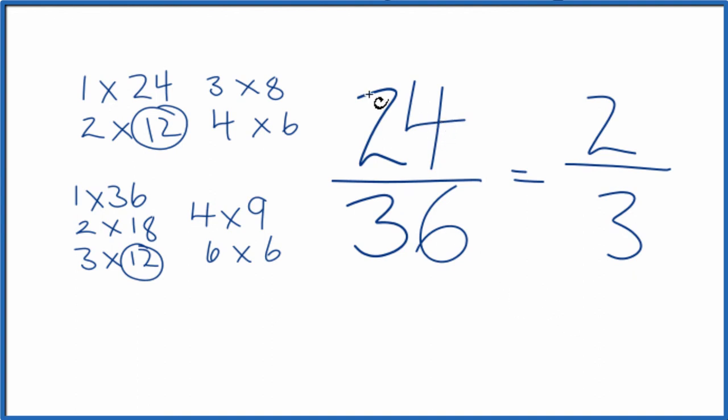If you didn't know that 12 went into 24 and 36, you could try something like 6, divide 6 into 24 and 36, and then simplify the resulting fraction down to 2/3.